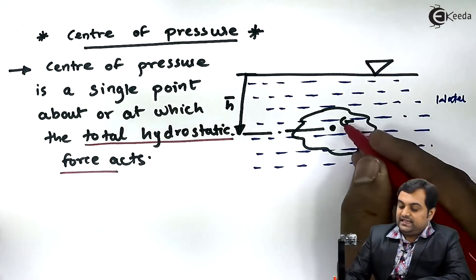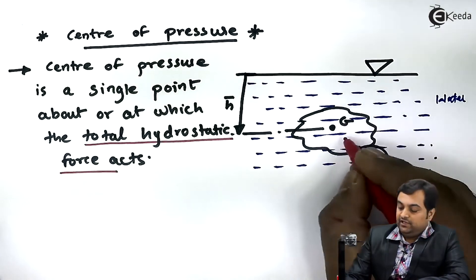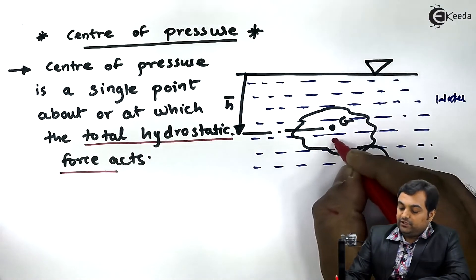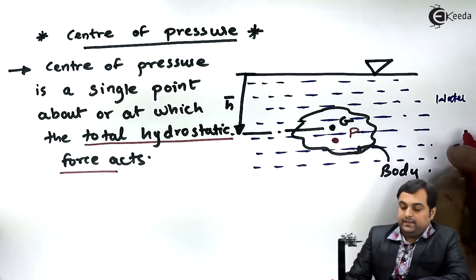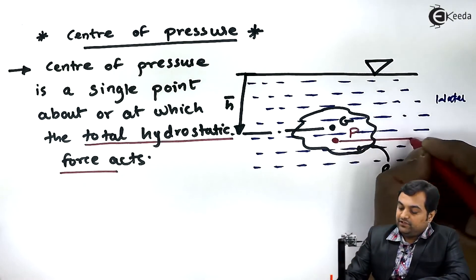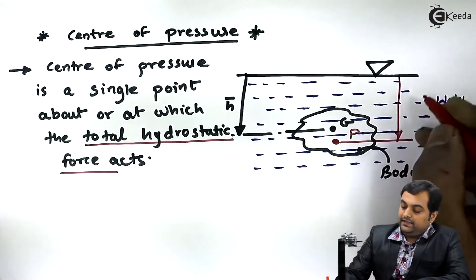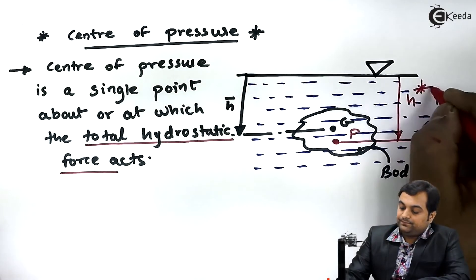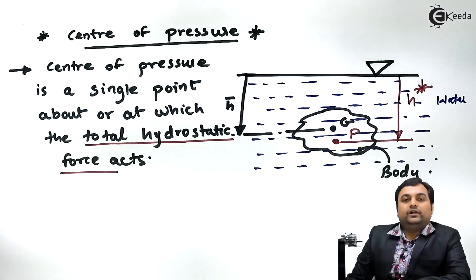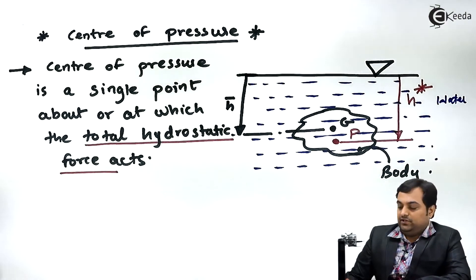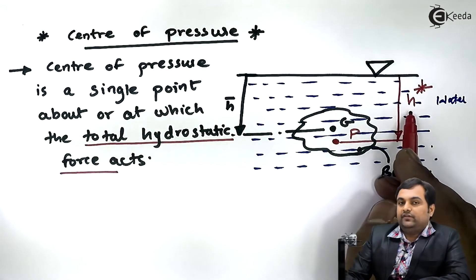So since I have denoted centroid by G, I will denote the center of pressure by letter P, and its distance from the free surface I'll denote it by H star. So once we have to calculate the center of pressure, its value we can find it out by using a formula.